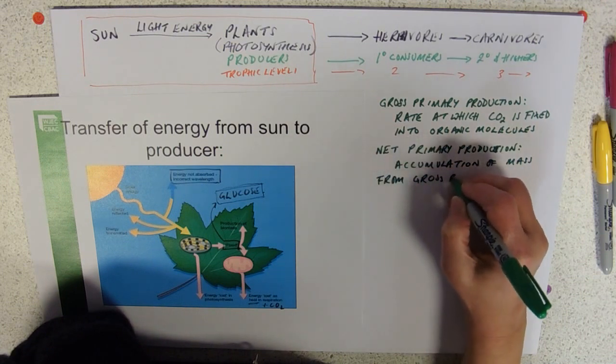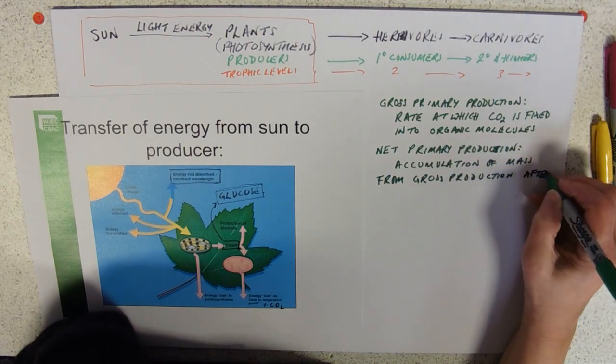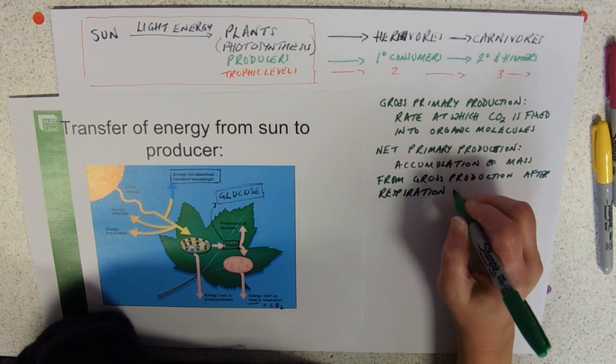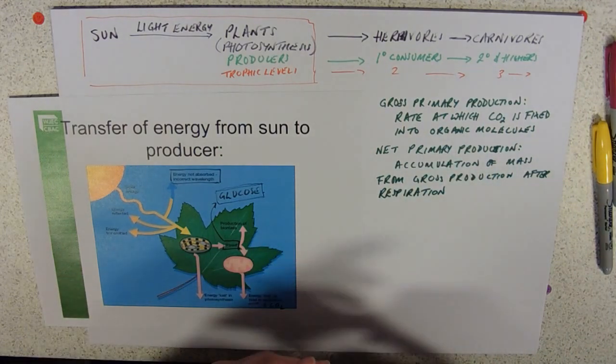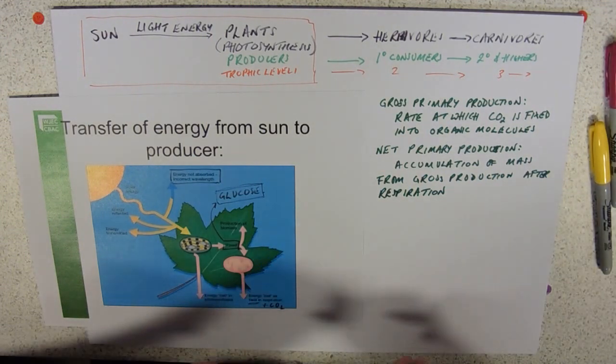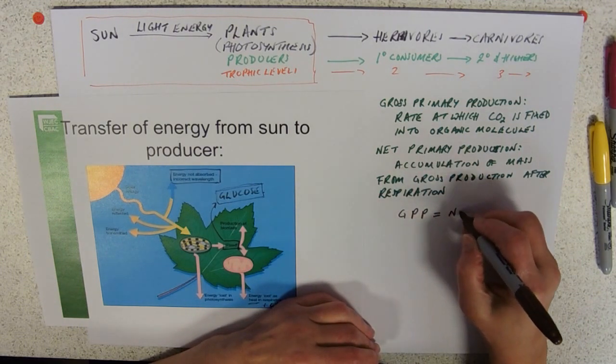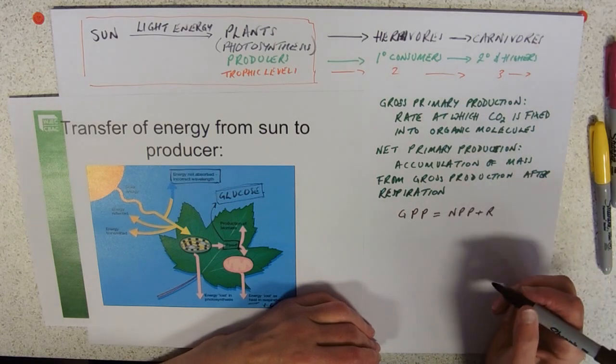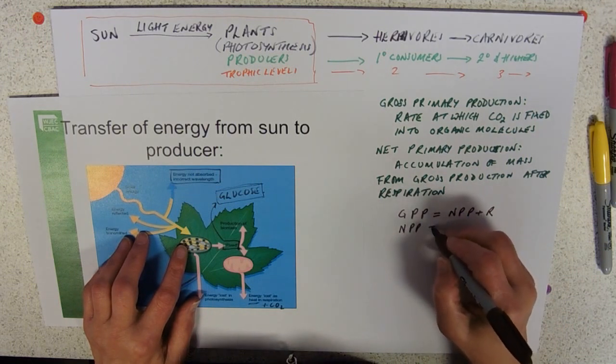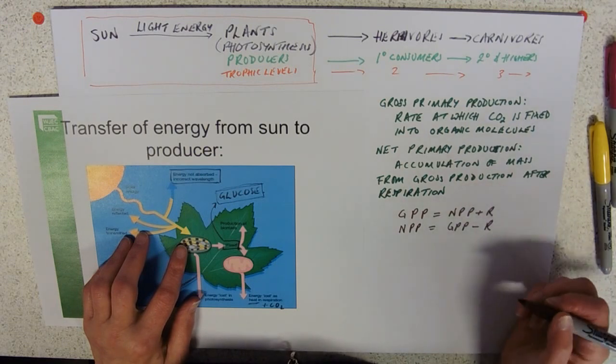It's the stuff left after respiration. That's the kind of stuff you need to learn. We can put that into an equation: gross primary productivity equals net primary productivity plus respiration. These two things added together equal that. You might need to rearrange it. So net primary productivity is everything you've fixed minus your respiratory losses.